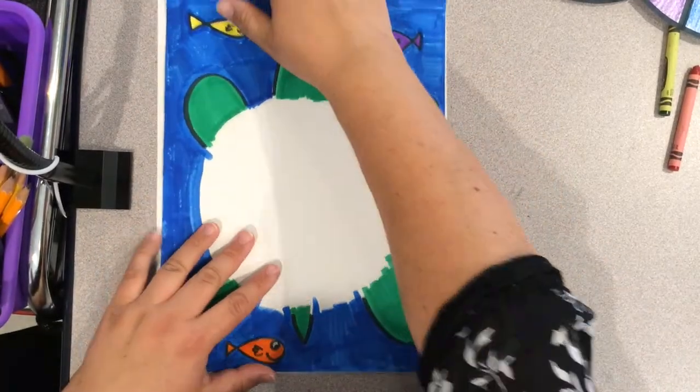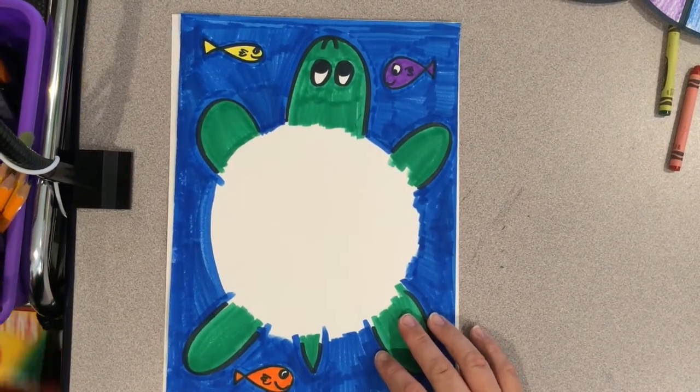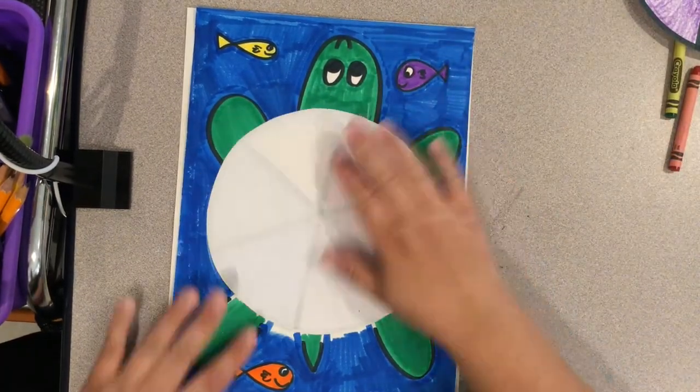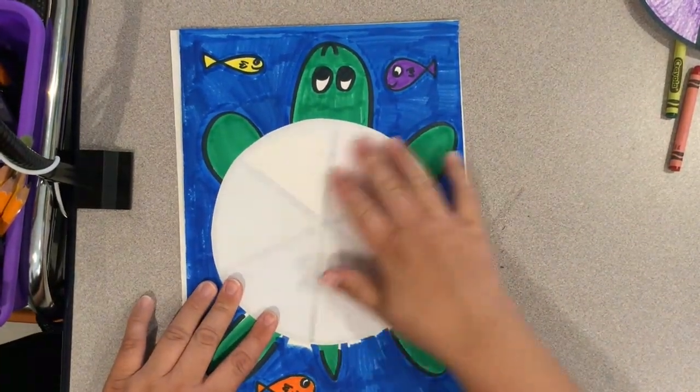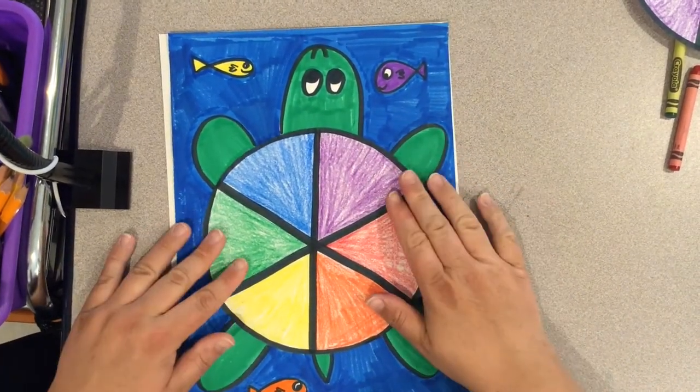Add some color and next we're going to glue on our turtle shell. So I was looking for glue and I didn't have any in my drawer, but just put some glue on the back, flip it over, rub it down and you're good to go.